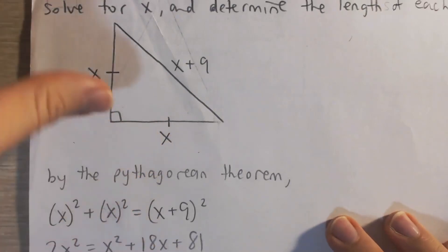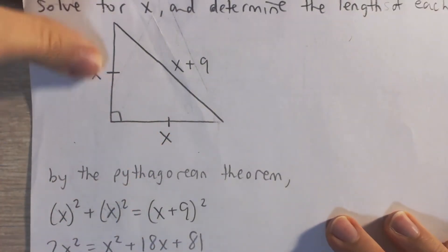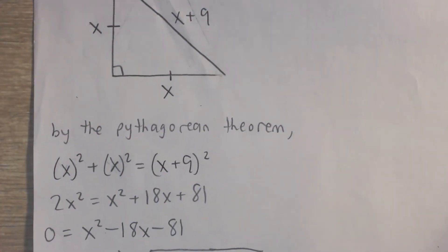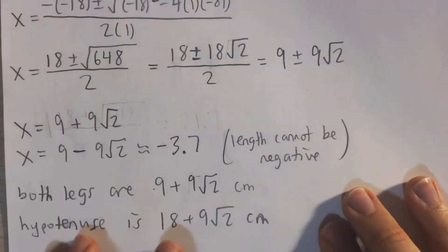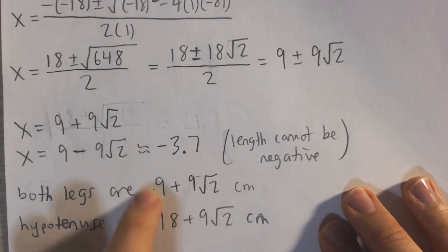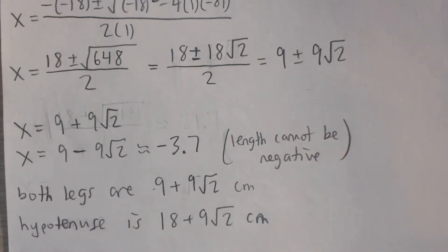And so these two side lengths, the two legs, or the isosceles sides, are 9 plus 9 square root of 2. And the hypotenuse side is x plus 9. So take this, add 9 to it, and you get 18 plus 9 square root of 2 centimeters.